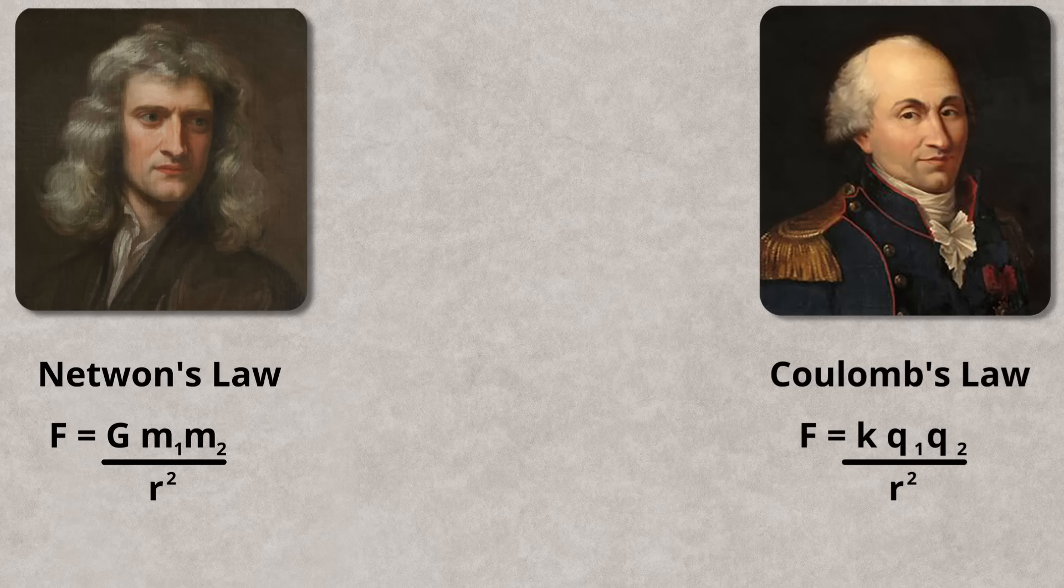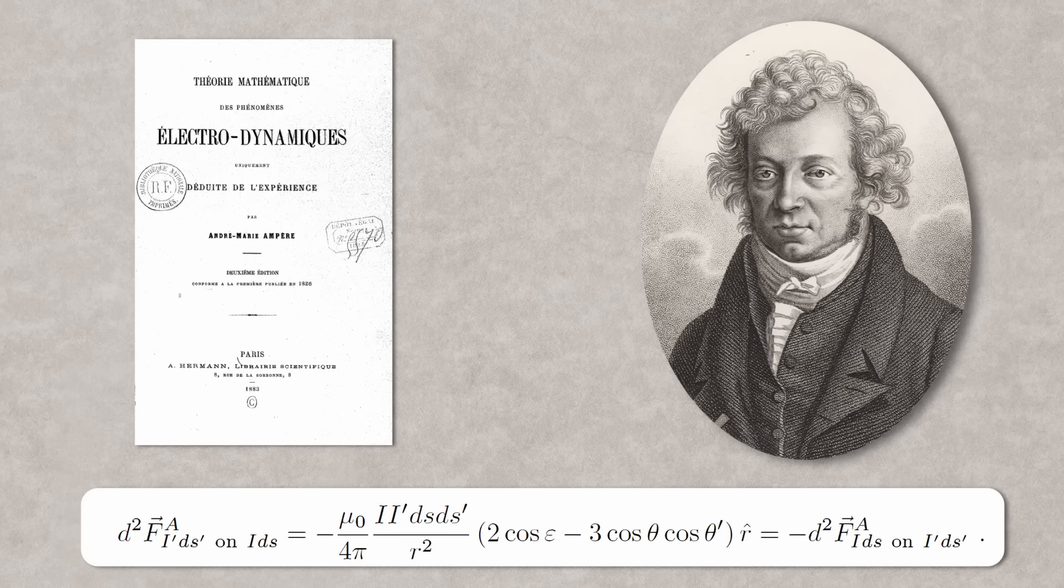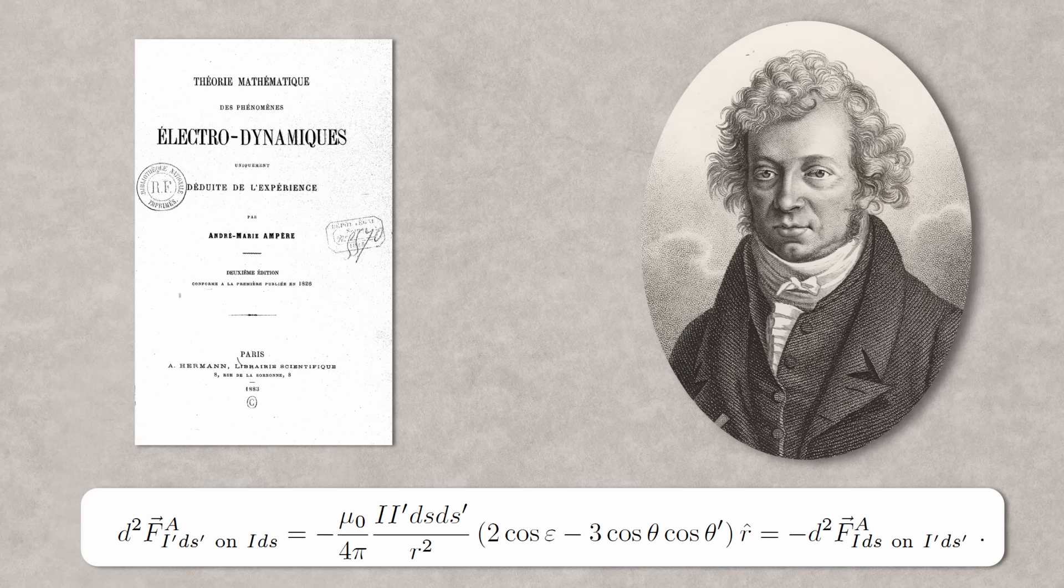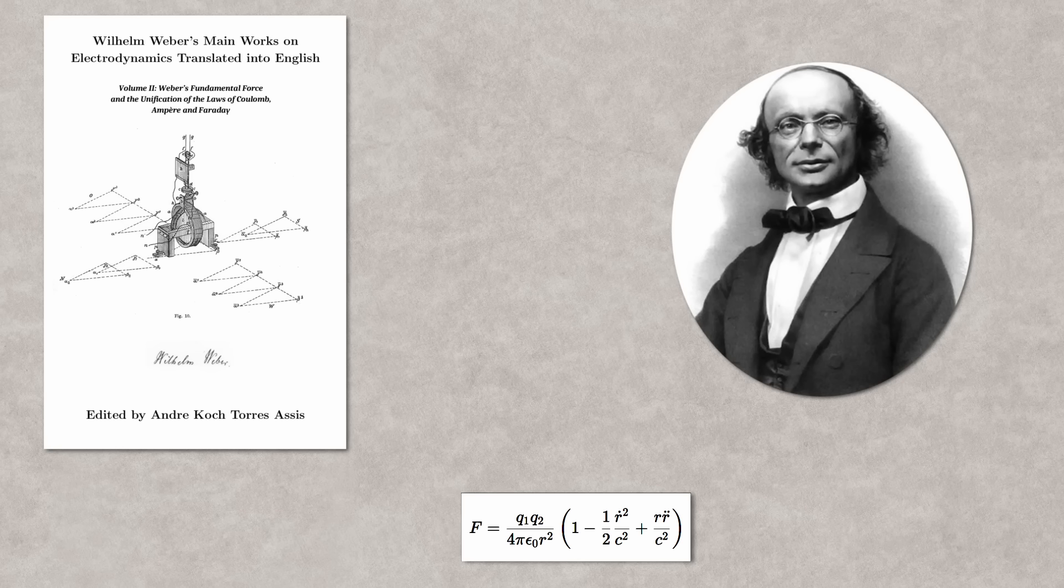At the time, this wasn't controversial. Newton's gravity and Coulomb's law were already understood as instantaneous forces acting at a distance, and Ampère assumed electrodynamics worked the same way. He even emphasised that the forces must obey Newton's third law in its strongest form, equal and opposite, and aligned along the straight line connecting elements. In his view, a force that acted off-axis or failed to reciprocate would violate basic mechanics. For decades, Ampère's ideas didn't vanish. Wilhelm Weber even built on them, formulating a more general law that applied to individual moving charges. But by the 1840s, the tide had begun to shift.